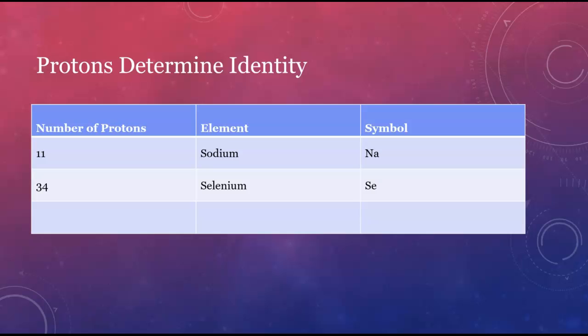Any atom that has 34 protons is always an atom of selenium. Selenium's symbol is capital S, lowercase e. And an atom with 92 protons is going to be uranium, symbol U.